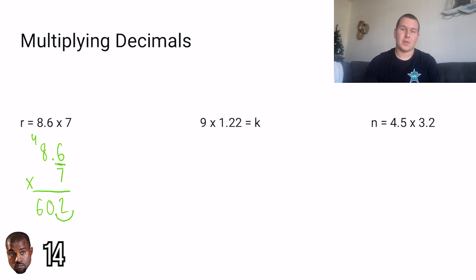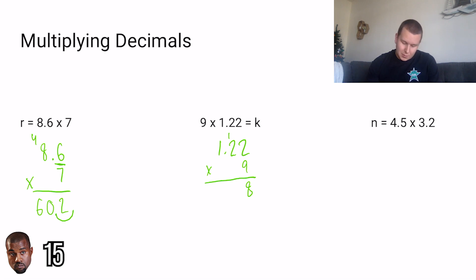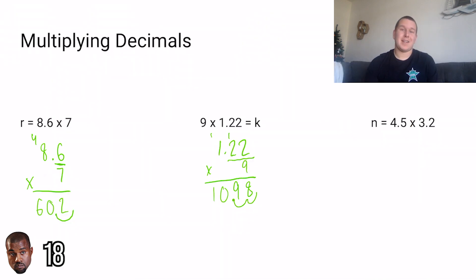Let's try the next problem. We have 9 times 1 and 22 hundredths equals k. Now this number has two numbers behind the decimal, but that doesn't change what we're going to do — we're just going to have to scoop it twice. So 1 and 22 hundredths has the most digits, so that goes on top, and we put 9 on the bottom. 9 times 2 would give us 18. 9 times 2 again would give us 18 plus 1 would give us 19. We're ignoring that decimal, so 9 times 1 equals 9 plus 1 equals 10. Now we count: two numbers are behind the decimal, so we scoop twice, and we've got 10 and 98 hundredths.